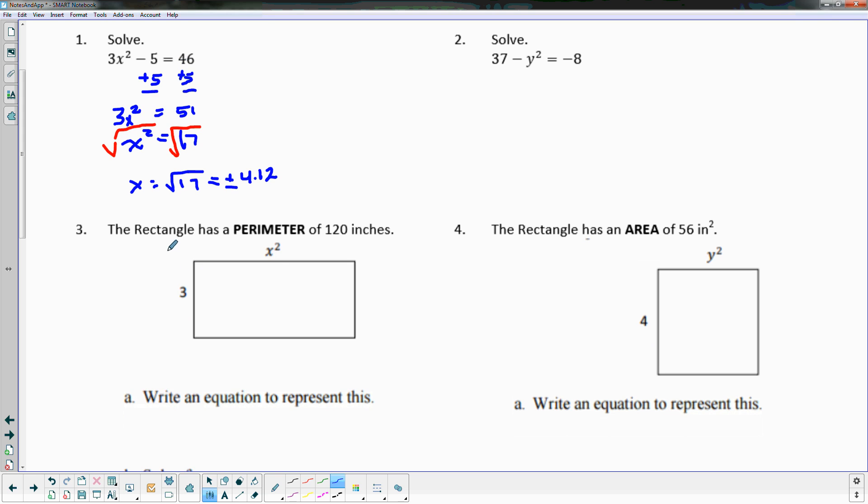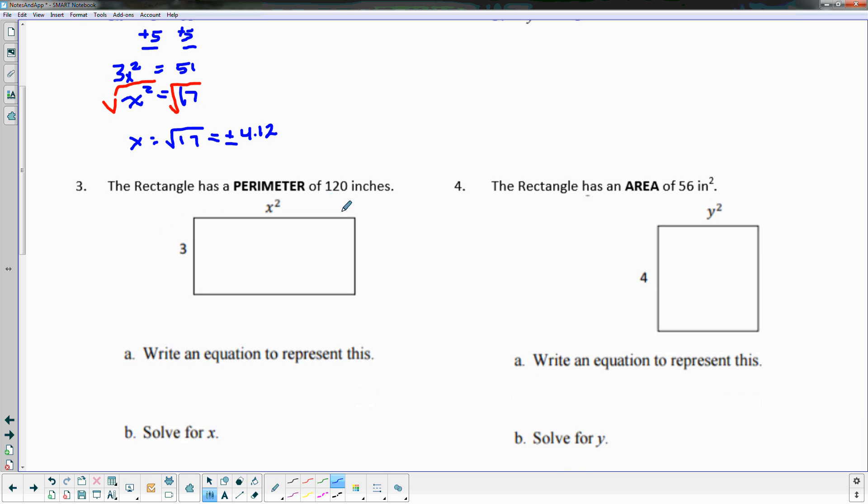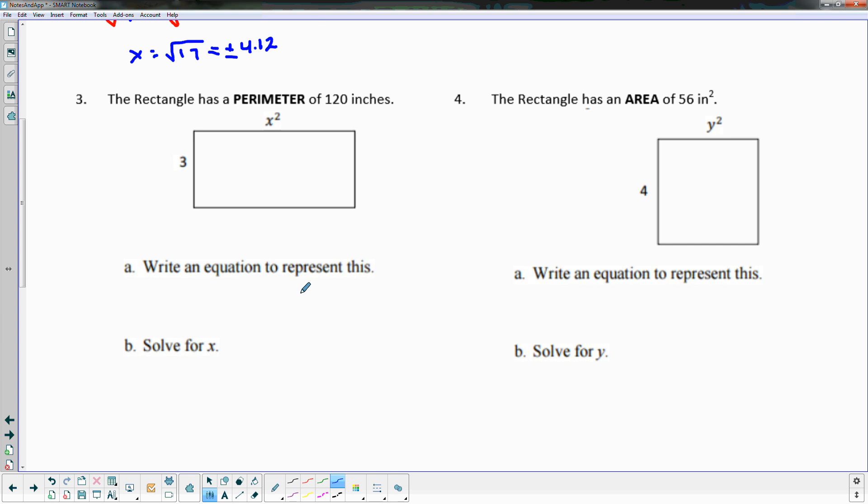For the next set of problems it says the rectangle has a perimeter of 120 inches and it gives you some measurements here. It says that this is x² and this is 3. It says write an equation to represent this. I'll write the equation, I'll let you solve it.